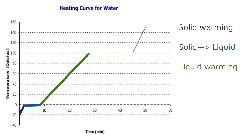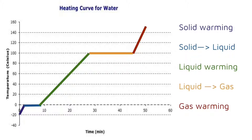In section 3, the liquid will heat up until it reaches the substance's boiling point — in this case 100 degrees Celsius, which is the boiling point of water. Section 4 has liquid water boiling and becoming steam; it's simply going from the liquid phase into the gaseous phase. Finally, section 5 has gas warming.